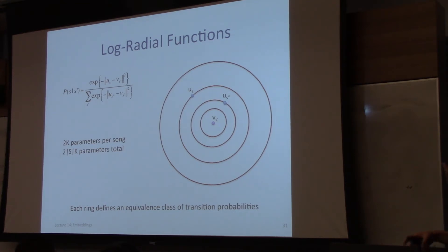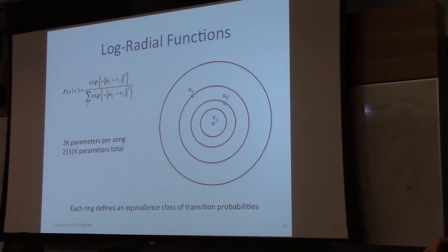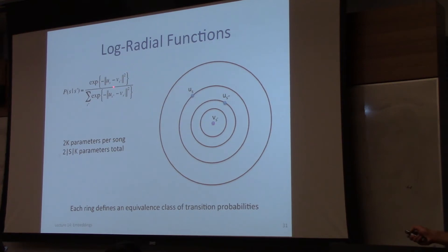What are entry point and exit point? Every song is associated with an entry point and exit point — they are parameters of the model. What these parameters tell you is they specify a probabilistic transition model. If we're modeling a playlist as a sequence with a first-order Markovian assumption, we're currently at song S prime, we look at its exit point and find all songs whose entry vectors U are close to it — that defines our probability distribution.